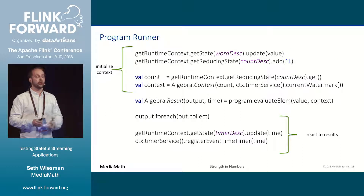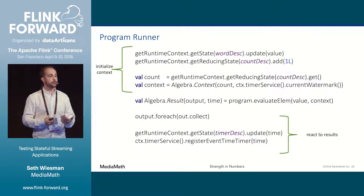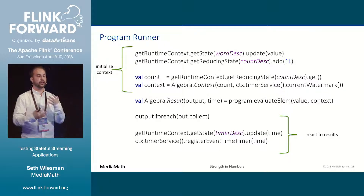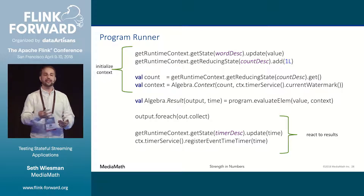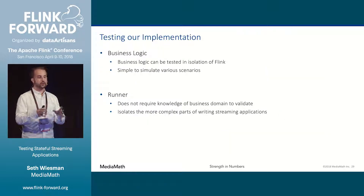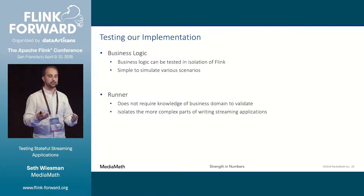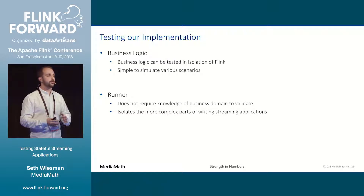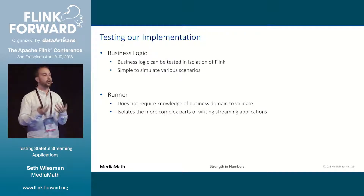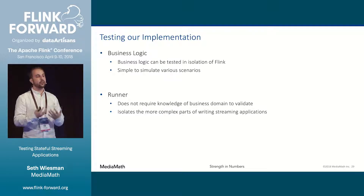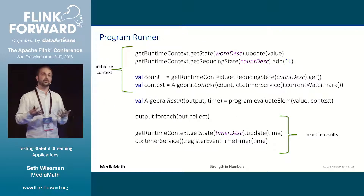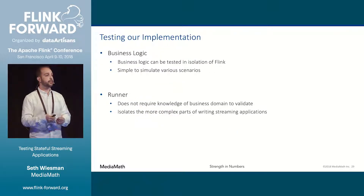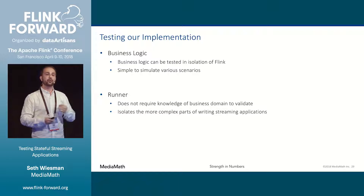Inside our process function, we're going to do almost nothing. We just follow the same pattern: initialize the context, setting up the current state of the world; run our black box business logic function; then do something appropriate with the results — outputting data downstream and setting timers. When it comes time to test, we can really look at these two things in isolation. First, just focus on the business logic, looking at whatever combinations of input data and state we find interesting. Then inside the process function, while it's certainly the more difficult segment to test, we've written almost nothing — there aren't even any branches, just a single case. So while these test cases may be more fragile, there will be fewer of them, and we're more likely to maintain them.